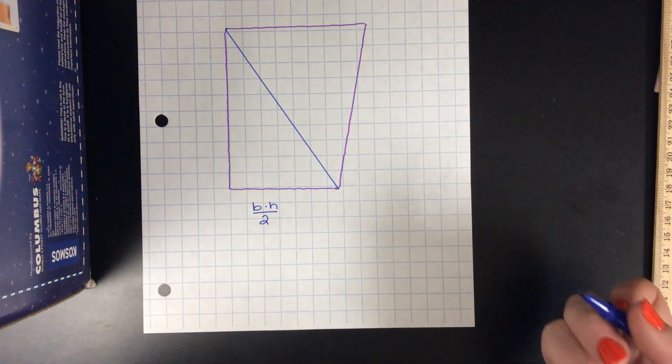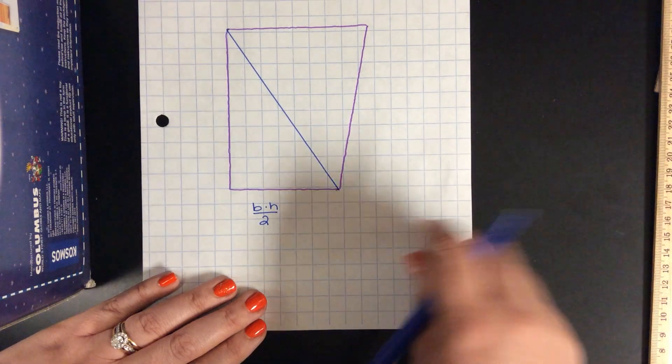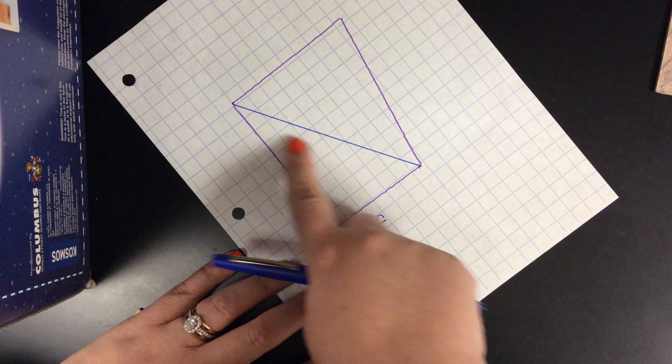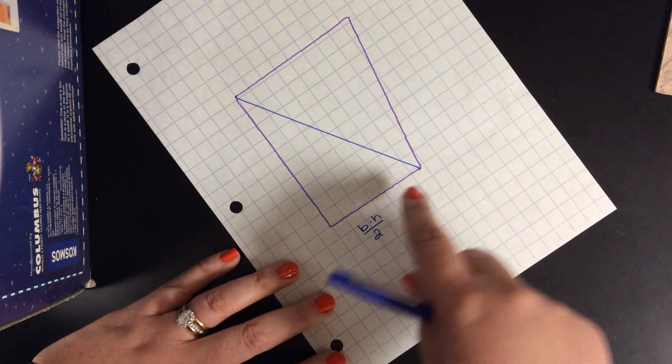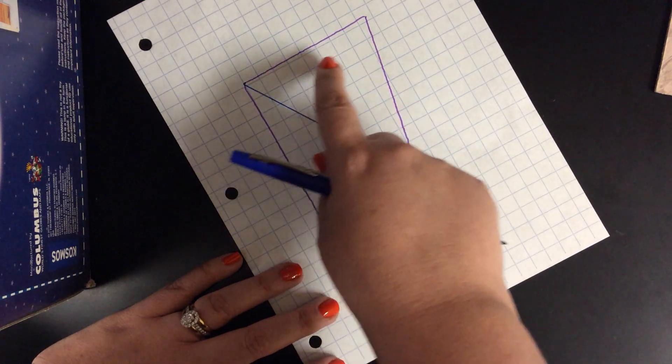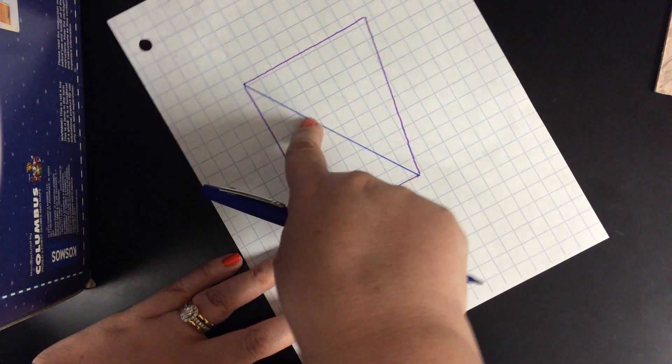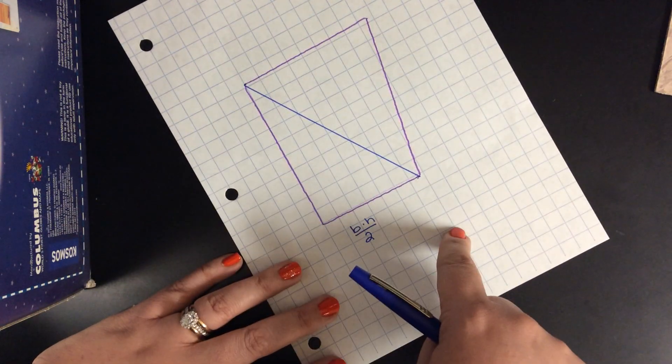So where's my base and where's my height? Well, the first thing that you want to do for a triangle is to find the height. Now the height of a triangle is going to be from a corner to the opposite side. It doesn't matter which one you use.